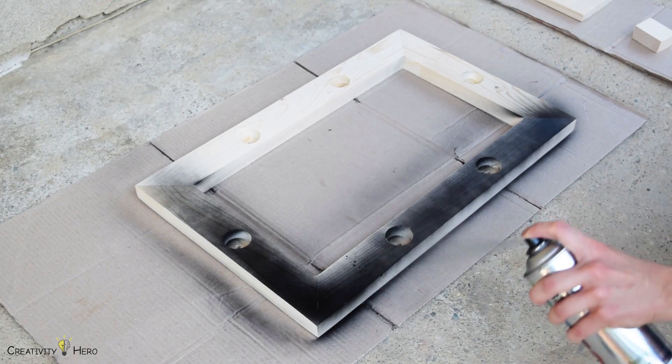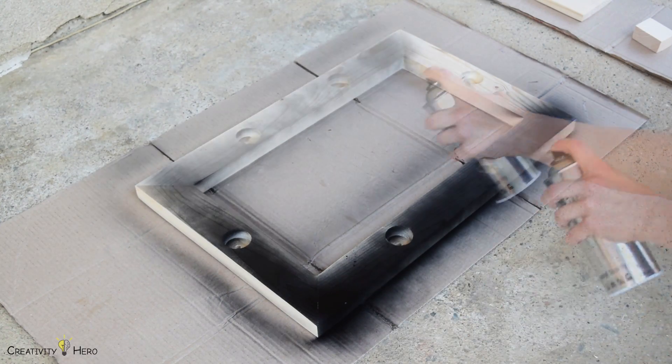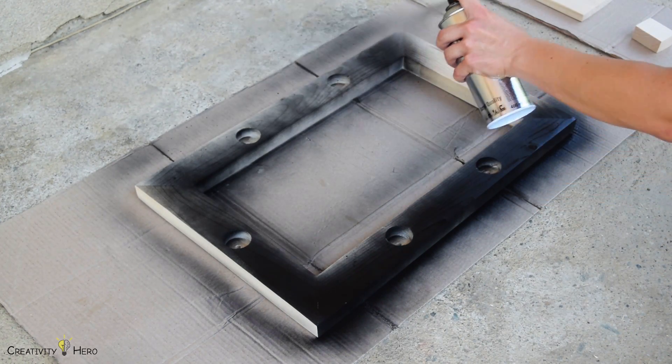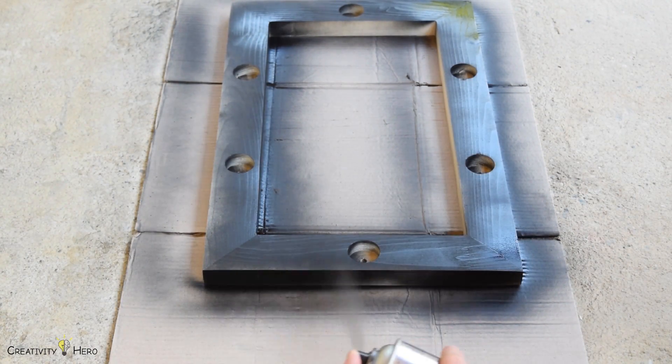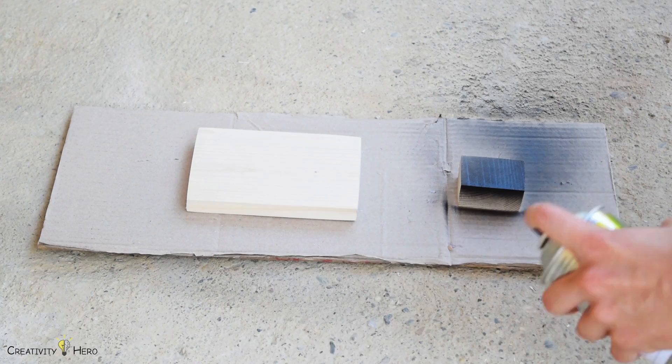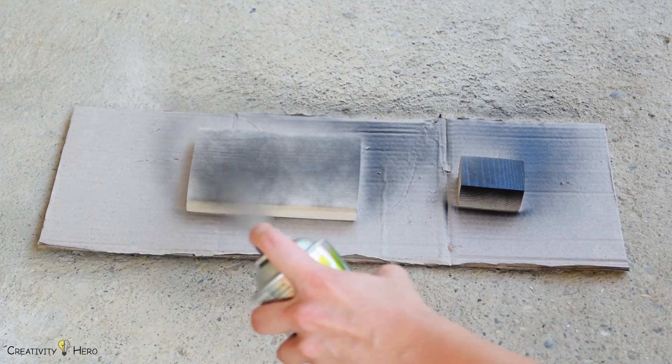Now it is time for painting. I'm going to use black spray paint in order to make the chandelier look similar to the one that I saw in the lighting store. I applied two coats of spray paint and left it to dry out.